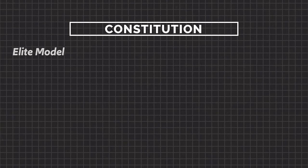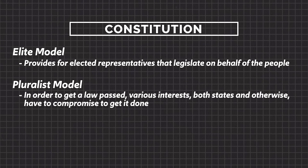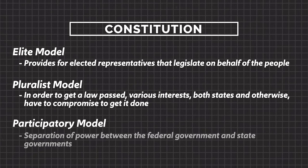There is a tension between those three models, and we'll look at how that tension is represented in a couple of our foundational documents. First, you see the tension represented in the Constitution. You can see the elite model in the fact that the Constitution provides for elected representatives that legislate on behalf of the people. You can see the pluralist model in the lawmaking process, because in order to get a law passed, various interests — both states and otherwise — have to compromise. And you can see the participatory model in the separation of power between the federal government and the state government; states can make their own laws provided that they don't conflict with the national laws. The word for that is federalism, but we're going to give that concept its own video.